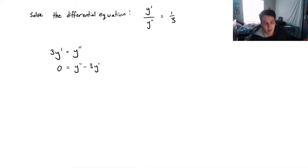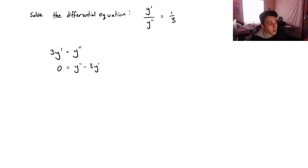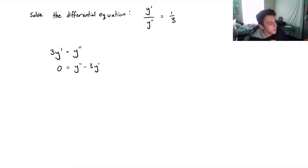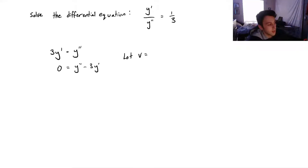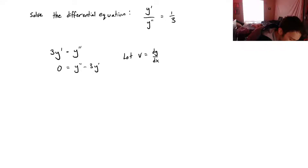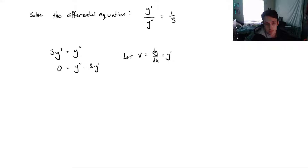If you've seen any of the other videos on this channel, you might know that there is a technique where you can solve this using an auxiliary equation. But it's really not necessary for something simple like this. We can actually use a very easy, simple substitution. So, what we're going to do is let's pick the variable v — we'll let v be equal to the first derivative of y, that'll be dy/dx or y prime.